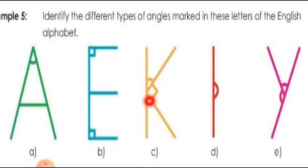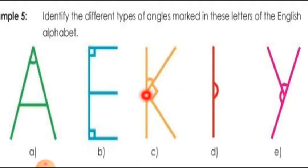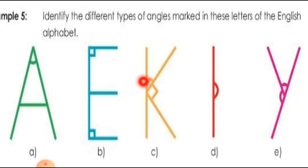Now look at this one. Here, two angles are shown. The first angle: this arm and this arm are making an angle — this is a right angle. And here the small angle forming is an acute angle. So an acute angle and a right angle are forming in the letter K.